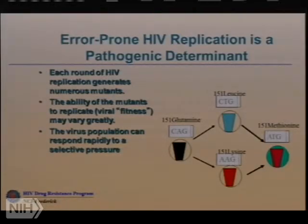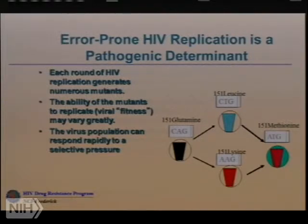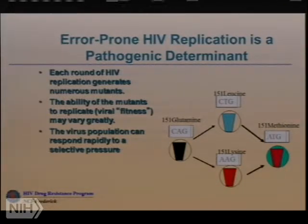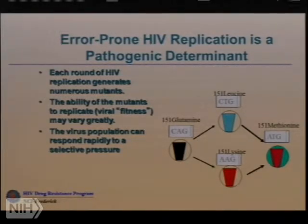Here's a typical example: position 151 in the reverse transcriptase gene normally has a glutamine, and the codon is CAG. One change from CAG to CTG gives leucine; from CAG to AAG gives lysine. A single nucleotide change — something that should occur every time this thing replicates — can give one of these variants. All of those can exist at any given time. One percent of virus in an infected individual who may have as many as 10^5 to 10^6 infected cells is a lot of virus.